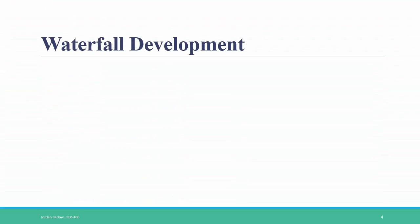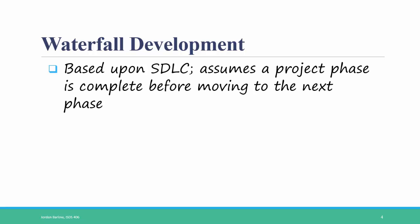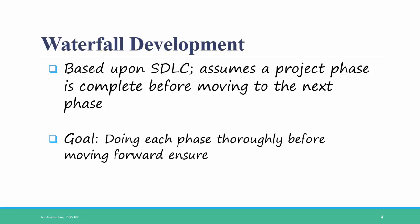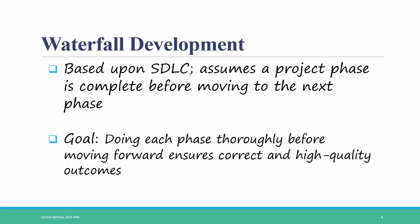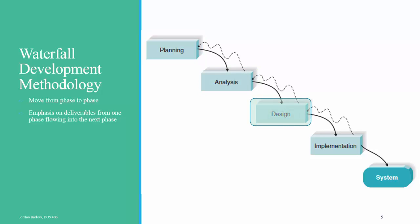The most traditional type of development methodology is waterfall. Waterfall is based upon the systems development lifecycle and it assumes a project phase is complete before moving on to the next phase. The goal of waterfall development is doing each phase thoroughly before moving forward, which will ensure correct and high quality outcomes. Waterfall development starts with your planning phase, and once all of the planning is done, you move on to analysis, then design, and then finally implementation.